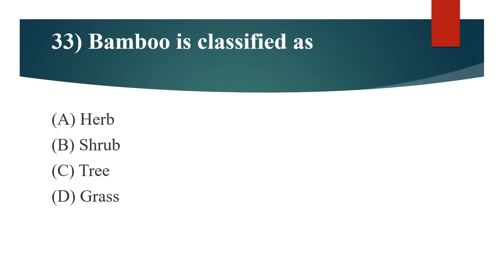33rd question: Bamboo is classified as? Option A: Herb. Option B: Shrub. Option C: Tree. Option D: Grass. Answer is Option D: Grass.